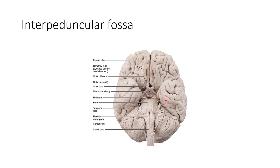The infundibulum of the pituitary gland is attached to the tuber cinereum. Behind it you are seeing the two mammillary bodies, parts of the hypothalamus, then the posterior perforated substance, which is pierced by the central branches of the posterior cerebral arteries. The contents include the oculomotor nerves and the medial aspect of the crus cerebri.